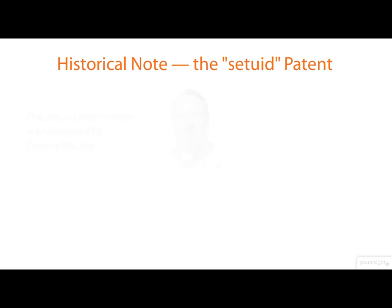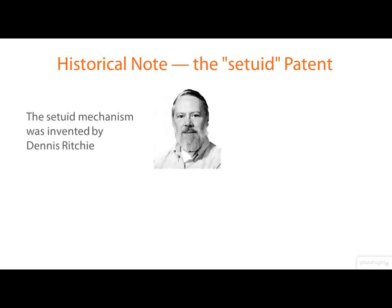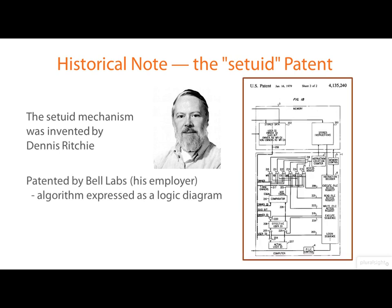On a historical note, the set user ID mechanism is important because it's at the heart of all privilege escalation in Linux. The original idea came from the late great Dennis Ritchie, who patented it through his employer Bell Labs. Interestingly, the algorithm was expressed in the patent as a logic diagram rather than as computer code. He never intended to make money from the patent, and it was placed in the public domain.